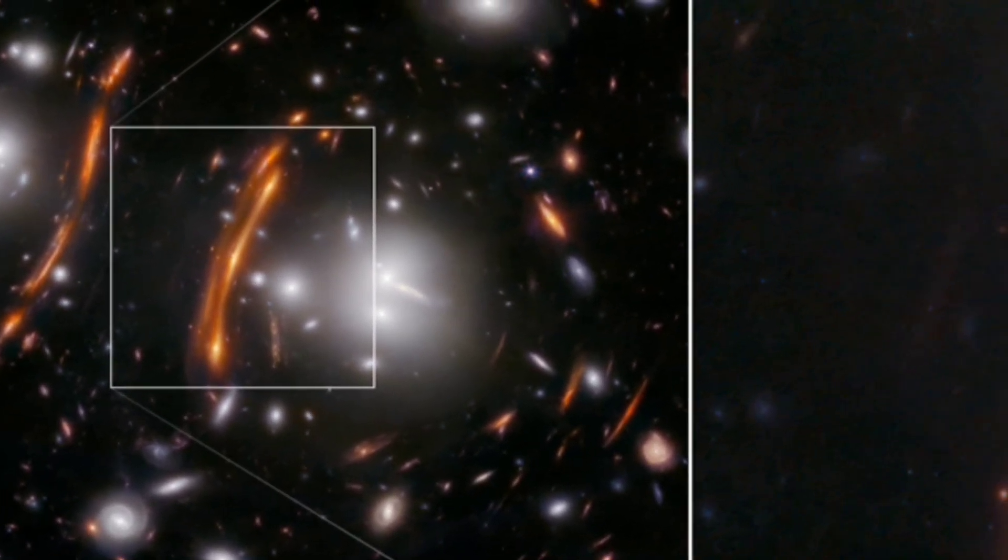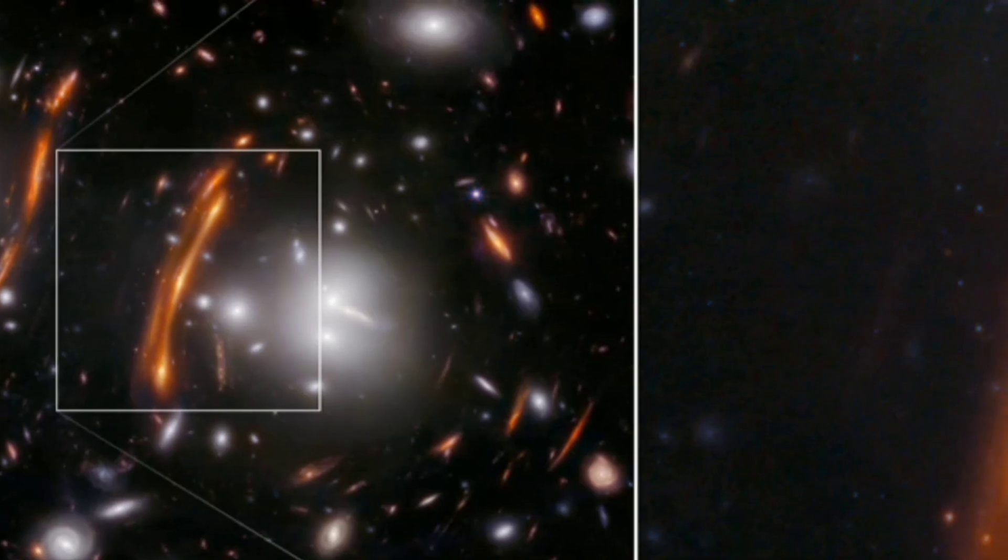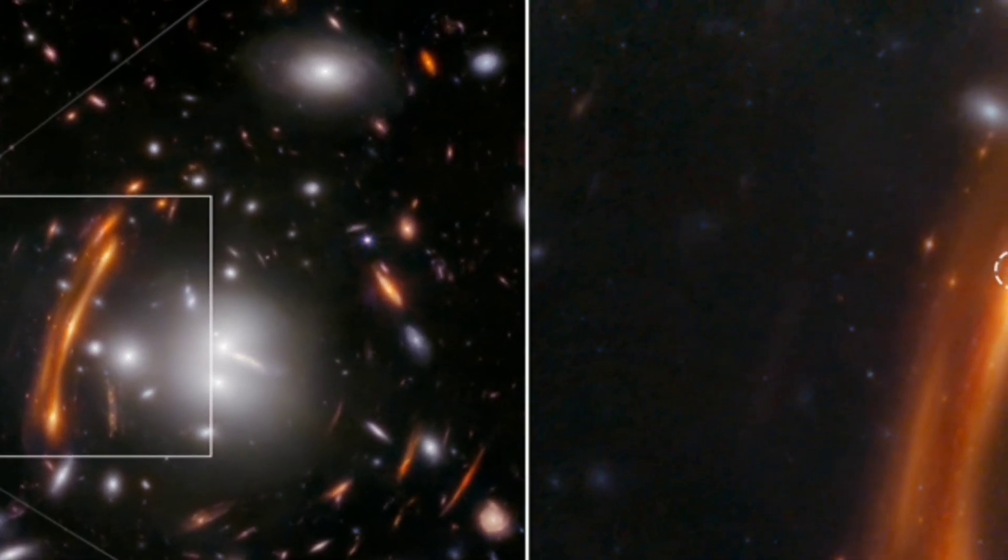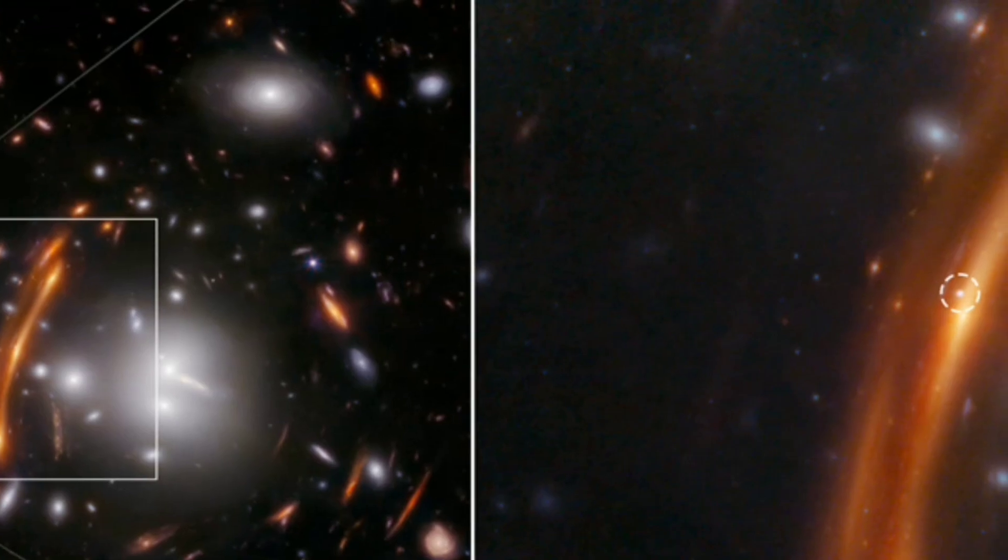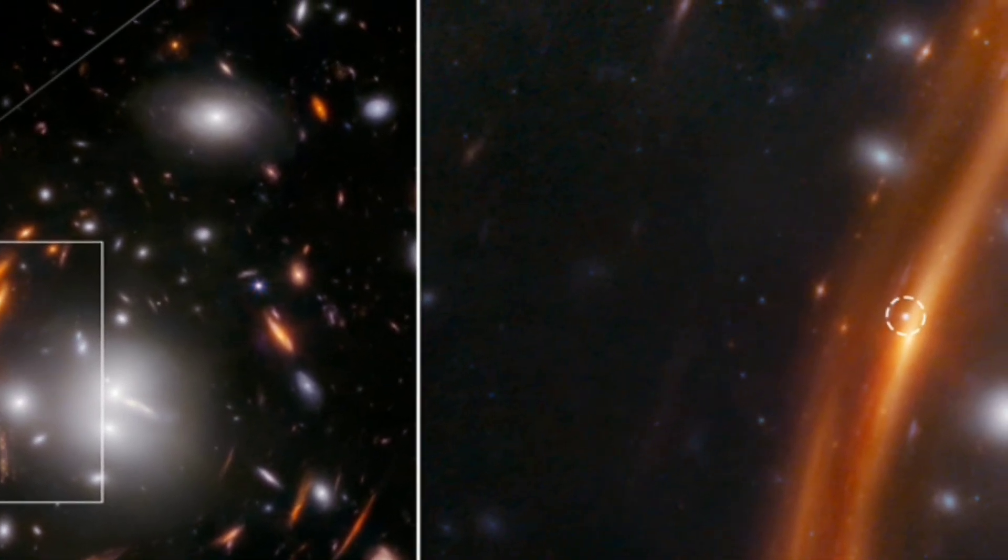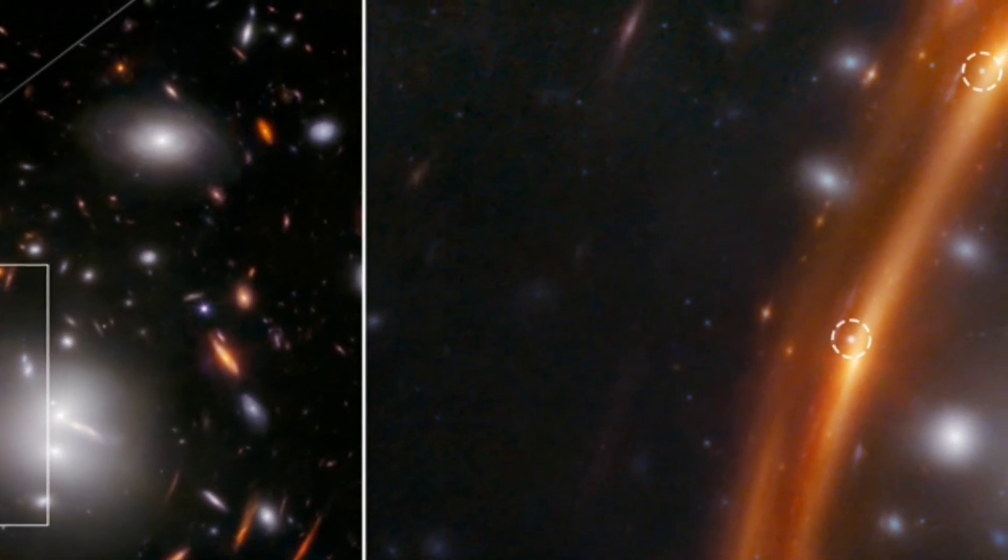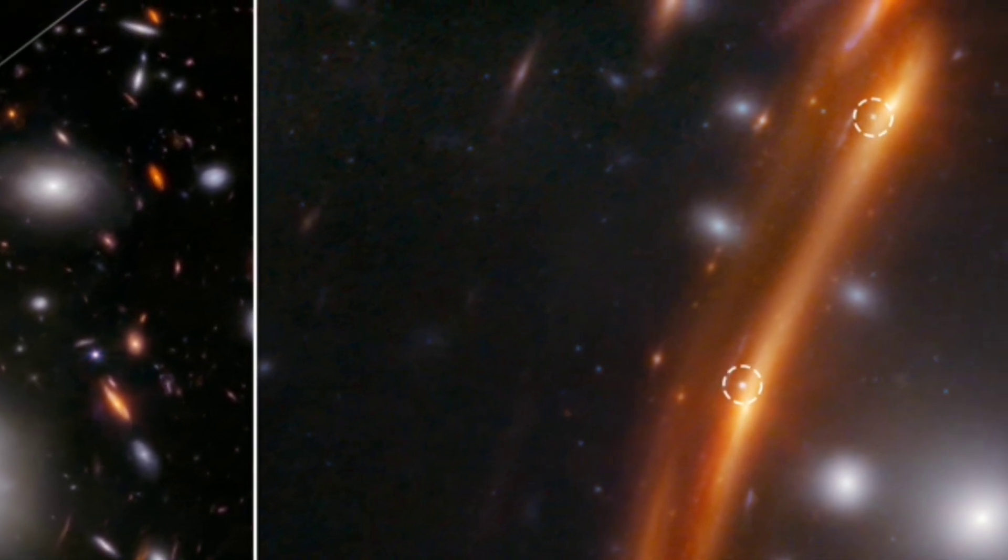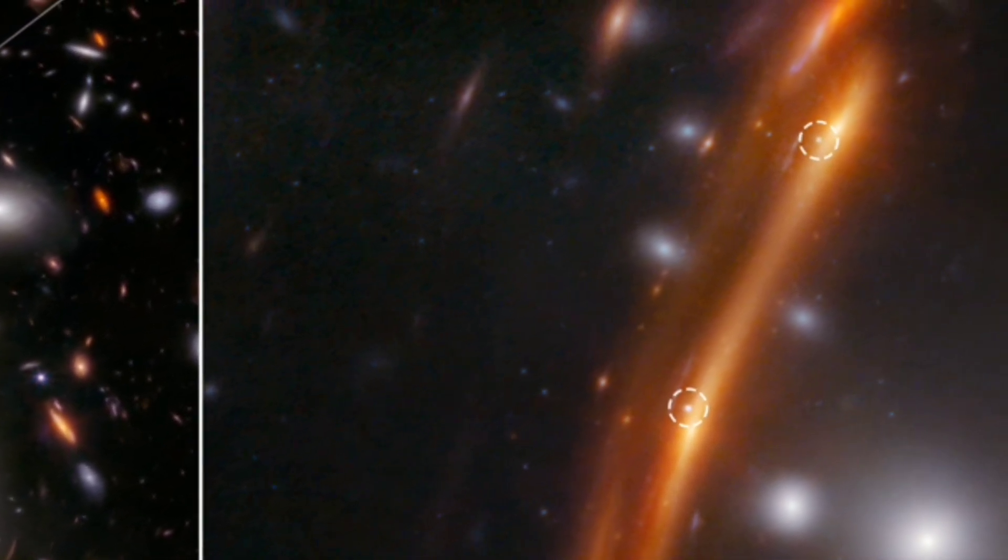Supernovae are known as some of the most violent explosions in the universe, often occurring when a star exhausts its fuel and collapses. The particular supernova in the G165 cluster resulted from a white dwarf, a dense and small star, accreting matter from a companion star until it reached a critical mass and exploded.